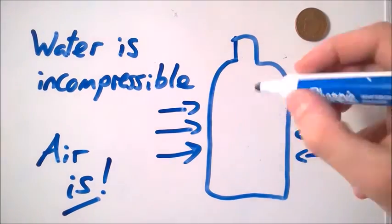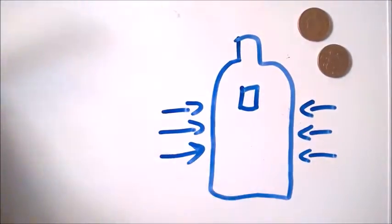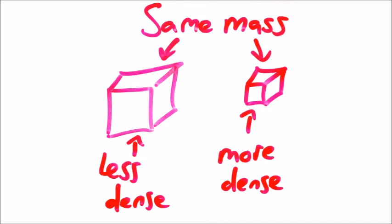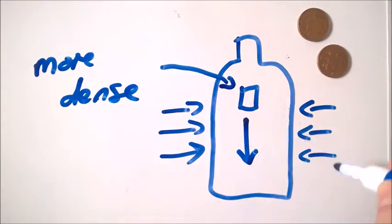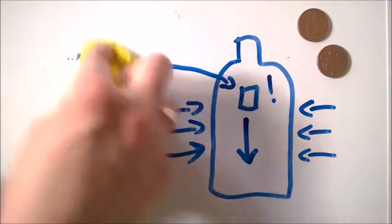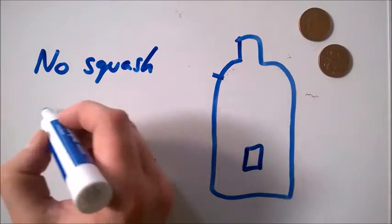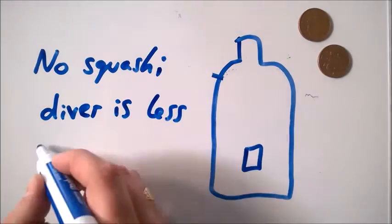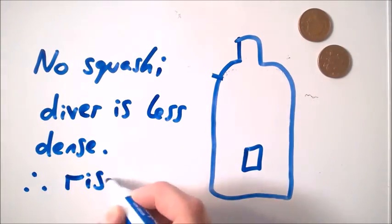When we compress the air enough it becomes more dense than the water around it. This makes it sink. When we let go of the bottle the air bubble returns to its original pressure and the diver is less dense than the water around it so it rises.